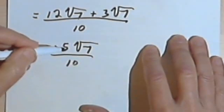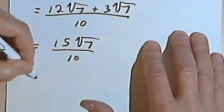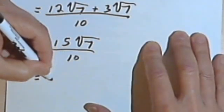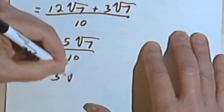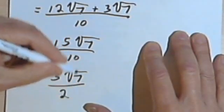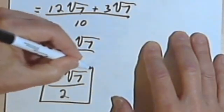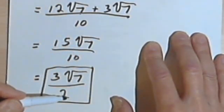so I have 15 times the square root of 7 over 10. And I can simplify this 15 over 10, I can divide them both by 5. So that's going to give me 3, 15 divided by 5 is 3, times the square root of 7, and the 10 divided by 5 is 2. So that's going to be my answer. 3 times the square root of 7 over 2.